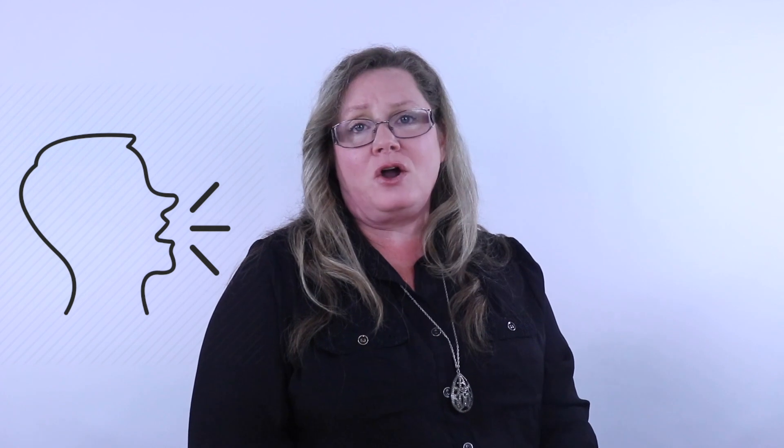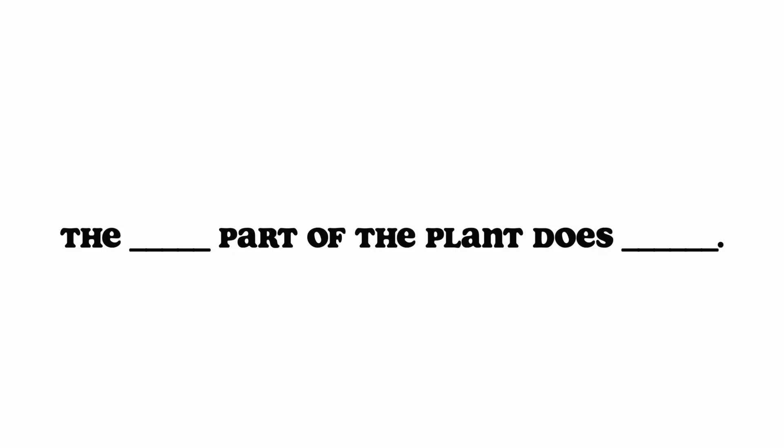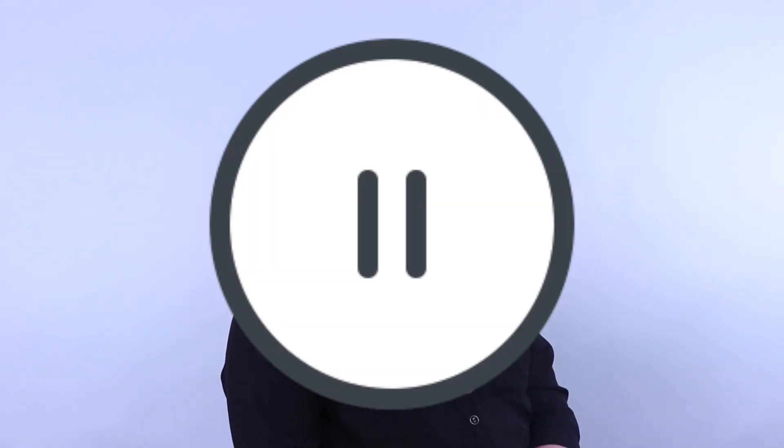Boys and girls, I want you to practice your turn and talk now that we've learned about all the different parts of the flower and the plant. We are going to say: 'The blank part of the plant does blank.' For example: 'The root part of the plant soaks up the water and anchors the plant.' Turn and talk to someone in your house and say those words — you pick the part of the plant and tell them what it does. Push pause and practice turn and talk.